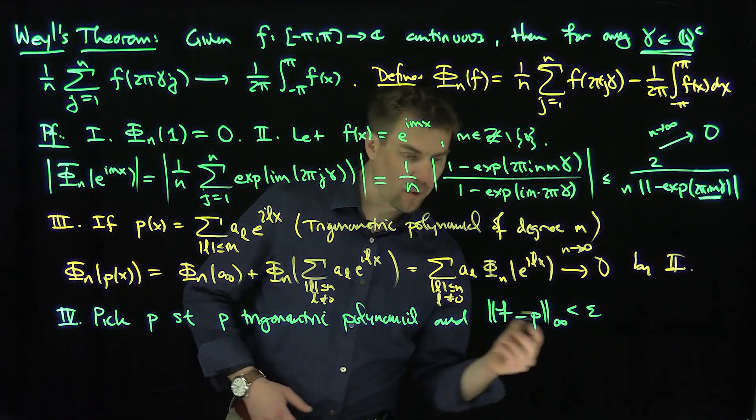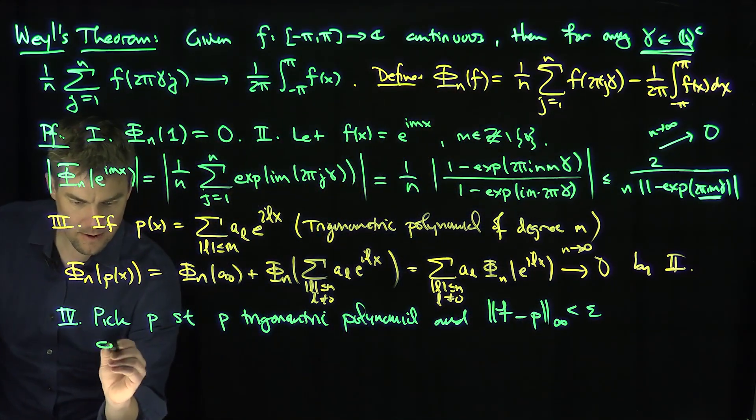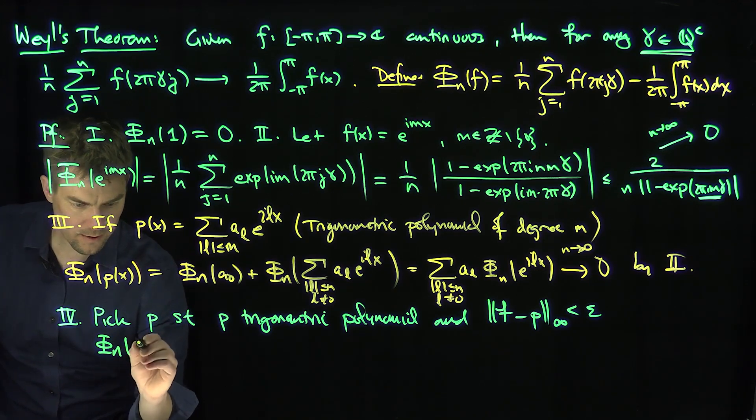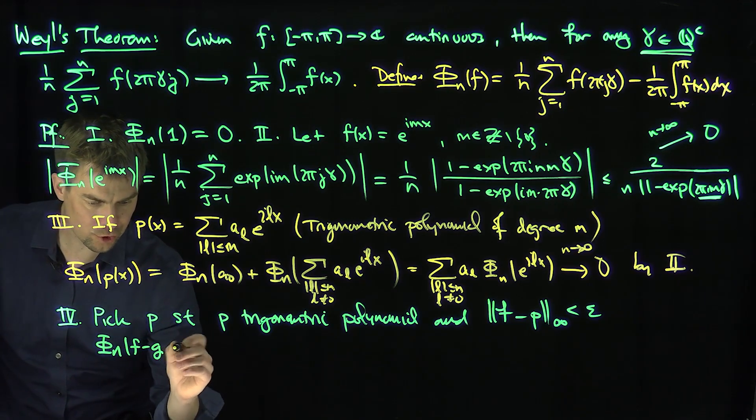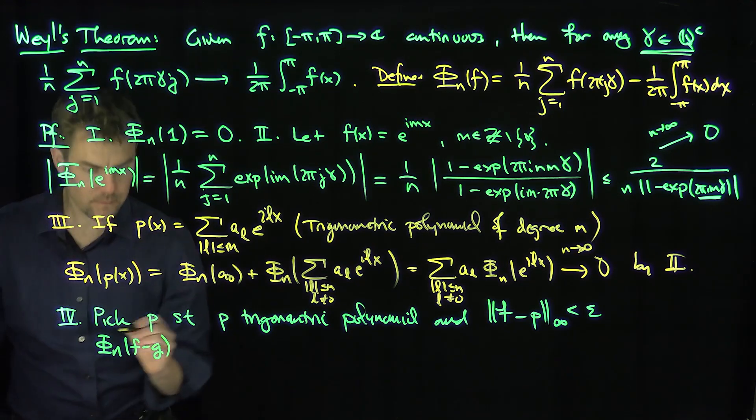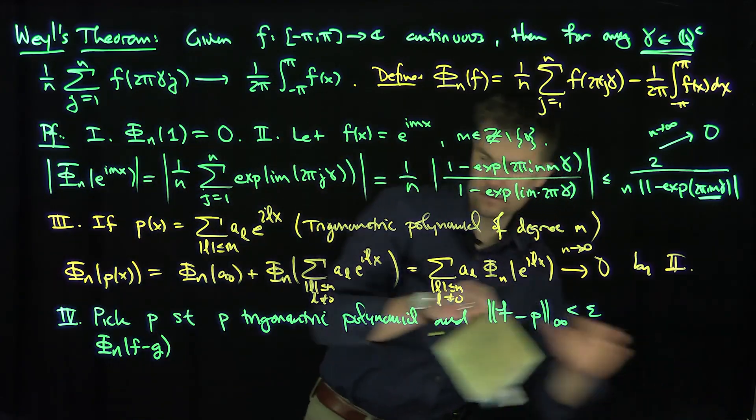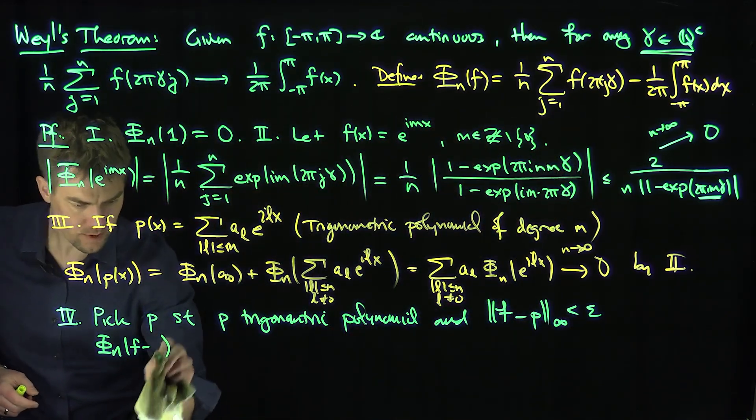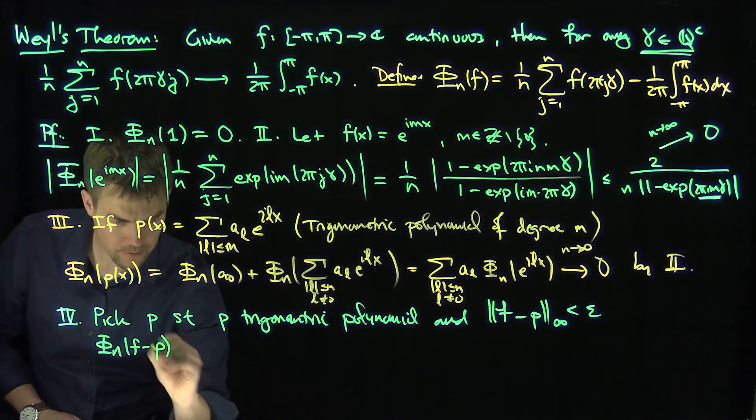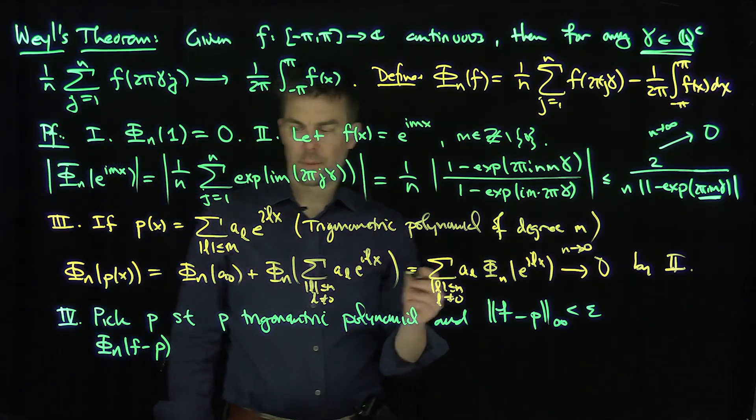And so now what can we say about the difference of the function? Now what can we say about the difference of φ? If this is so, then how can we estimate φ? So then φ_n of f minus p, for this polynomial, will be less than what?